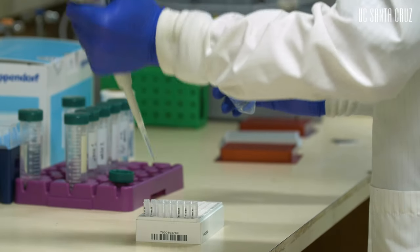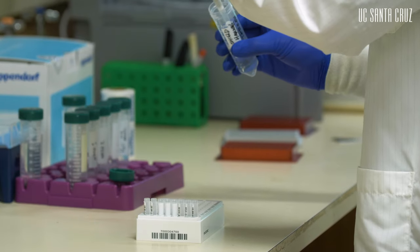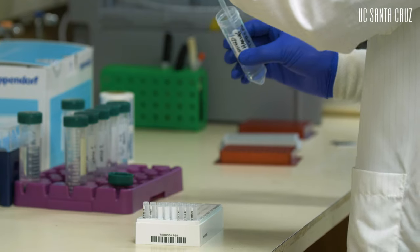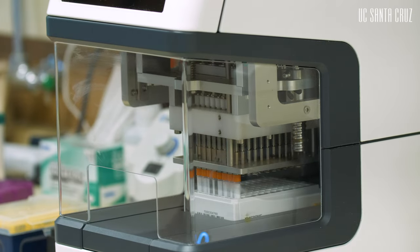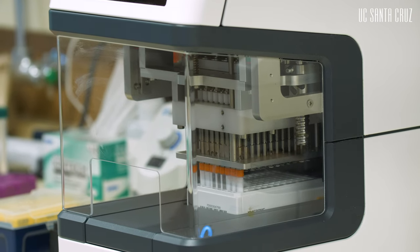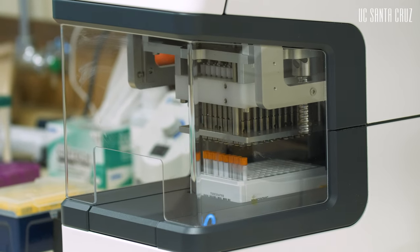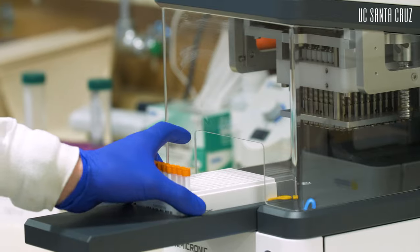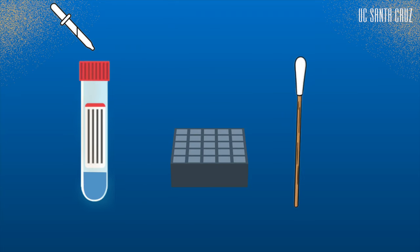RNA shield is dispensed into 1.4-milliliter 2D pre-barcoded tubes. Etched barcodes allow us to process samples in a high-throughput manner to instantly know which samples are coming back to us. The test kits are built in-house in our lab. The kits can be assembled in minutes using our Agilent Bravo, which is a 96-well liquid handling robot that can very accurately dispense liquid. The kits include tubes filled with RNA shield, racks, and swabs.